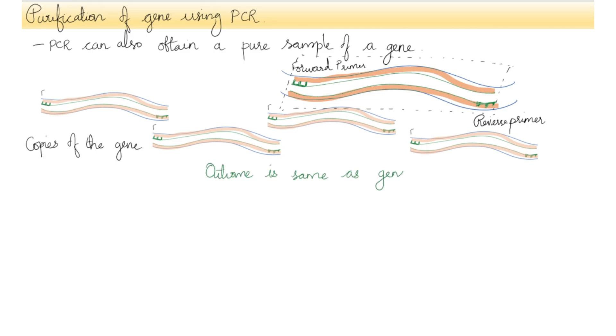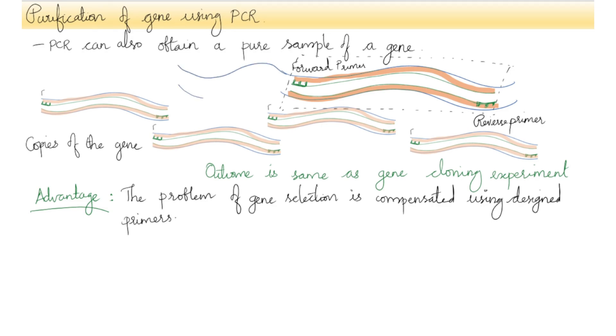The outcome is the same as with a gene cloning experiment, although the problem of selection does not arise because the desired gene is automatically selected as a result of the positions at which the primers anneal. A PCR experiment can be completed in a few hours, whereas it takes weeks if not months to obtain a gene by cloning.